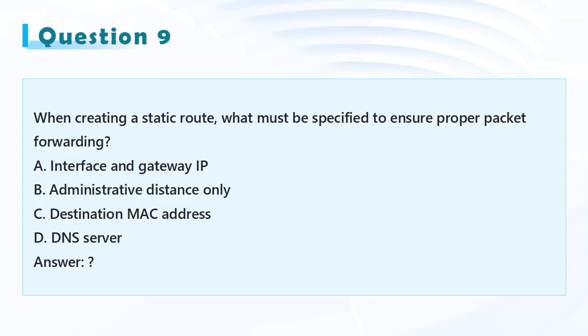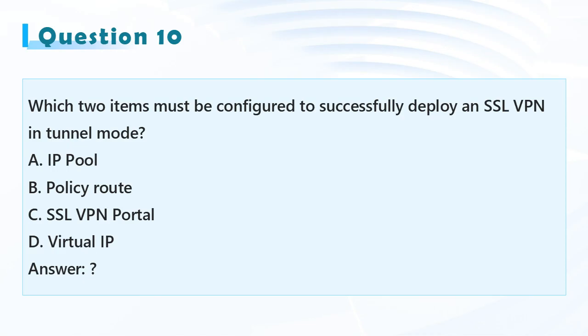Question 10: Which two items must be configured to successfully deploy an SSL VPN in tunnel mode? A. IP pool, B. Policy route, C. SSL VPN portal, D. Virtual IP.